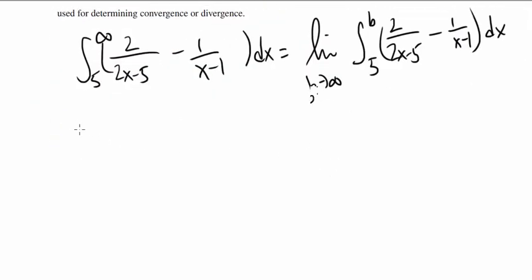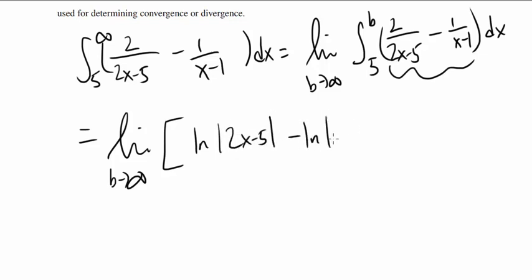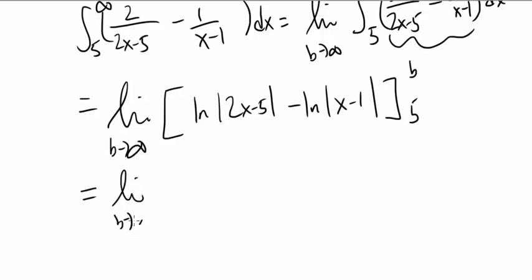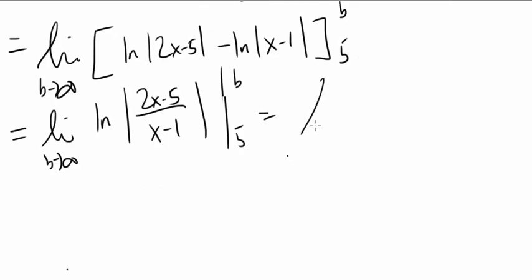What is this? Limit as b approaches infinity of... let's integrate this expression. That's natural log of absolute value of (2x - 5) minus natural log of absolute value of (x - 1) from 5 to b. That's the limit as b approaches infinity of natural log of (2x - 5) divided by (x - 1) from 5 to b. This simplifies as limit as b approaches infinity of natural log of (2b - 5) over (b - 1) minus natural log of 5 over 4.